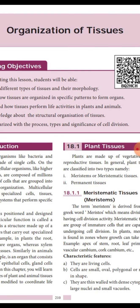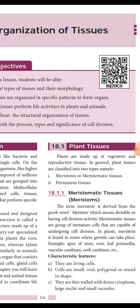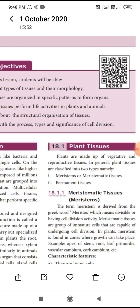In plant tissue, there are two types: one is called vegetative tissue and another is called reproductive tissue. See figure 18.1 on page 210. Vegetative tissue is associated with body parts seen in all vegetative organs like stem, root, leaves, etc. Reproductive tissue is found in reproductive organs such as flower, fruit, and seed.